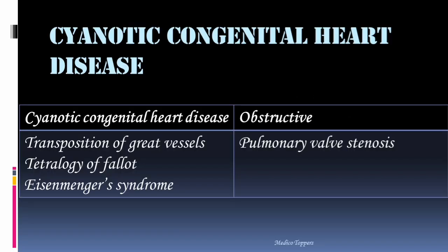We have discussed all the cyanotic congenital heart diseases. In the cyanotic category: transposition of great vessels, tetralogy of Fallot, Eisenmenger syndrome, and if there is obstruction it is pulmonary valve stenosis.